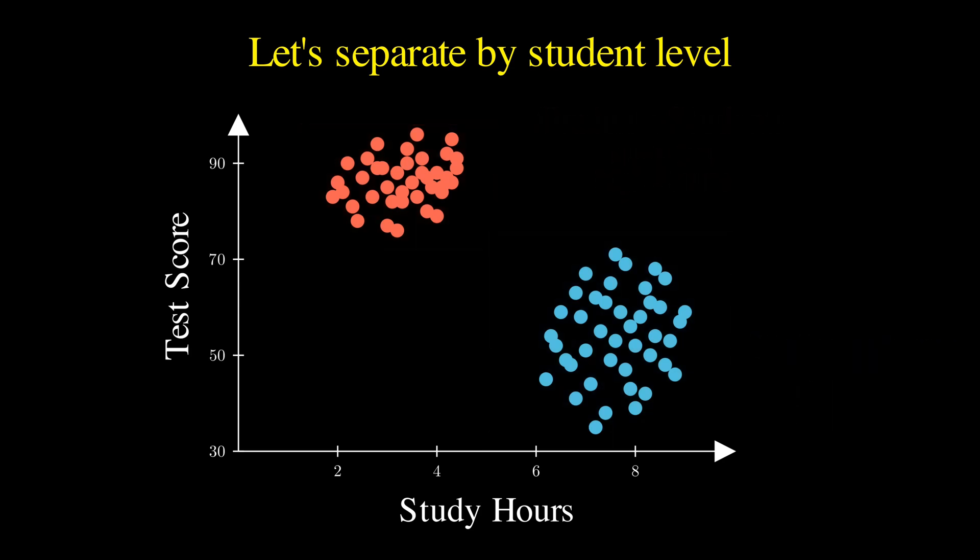When we examine the relationship within each group separately, we discover something that makes perfect sense. Both undergraduates and graduate students show positive correlations between study time and performance within their respective groups. But here's where the paradox reveals itself.